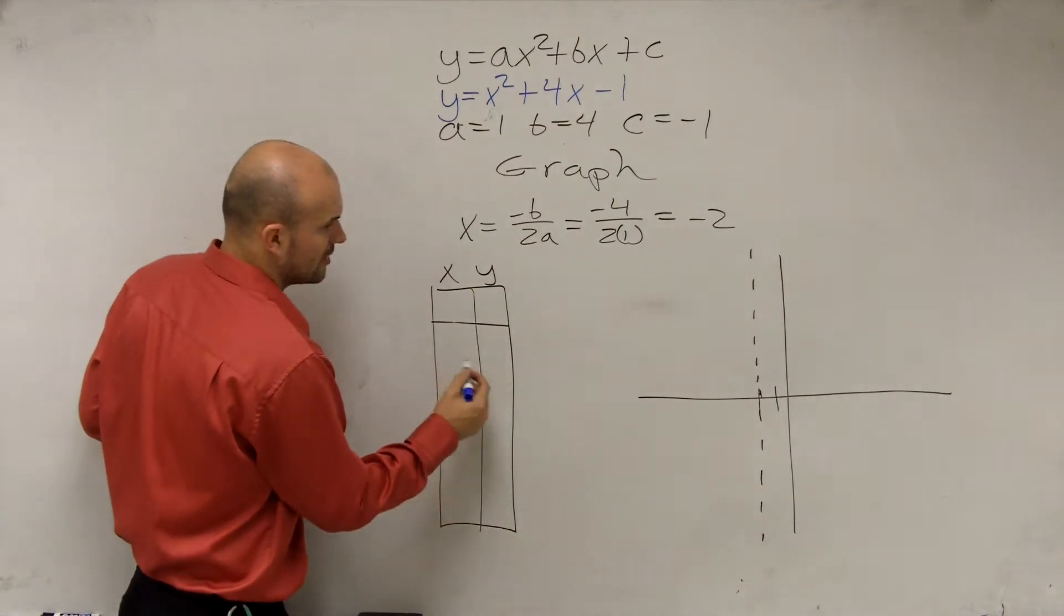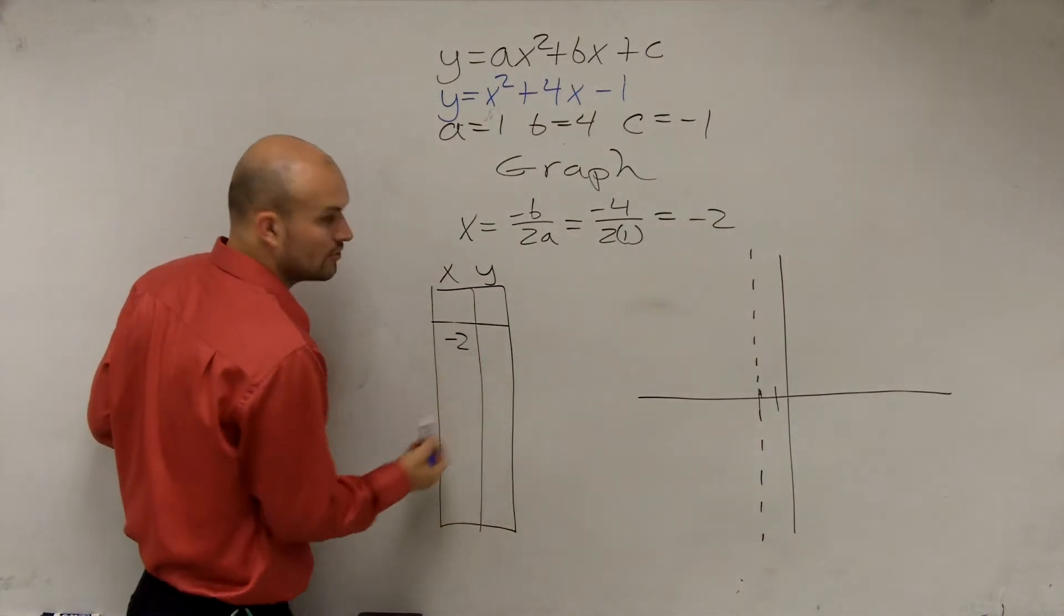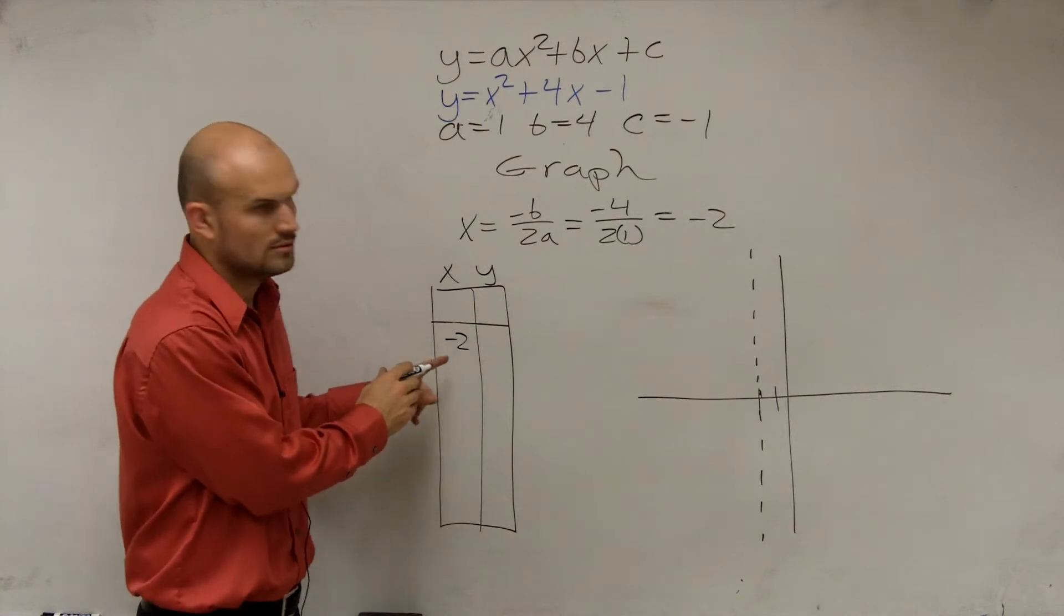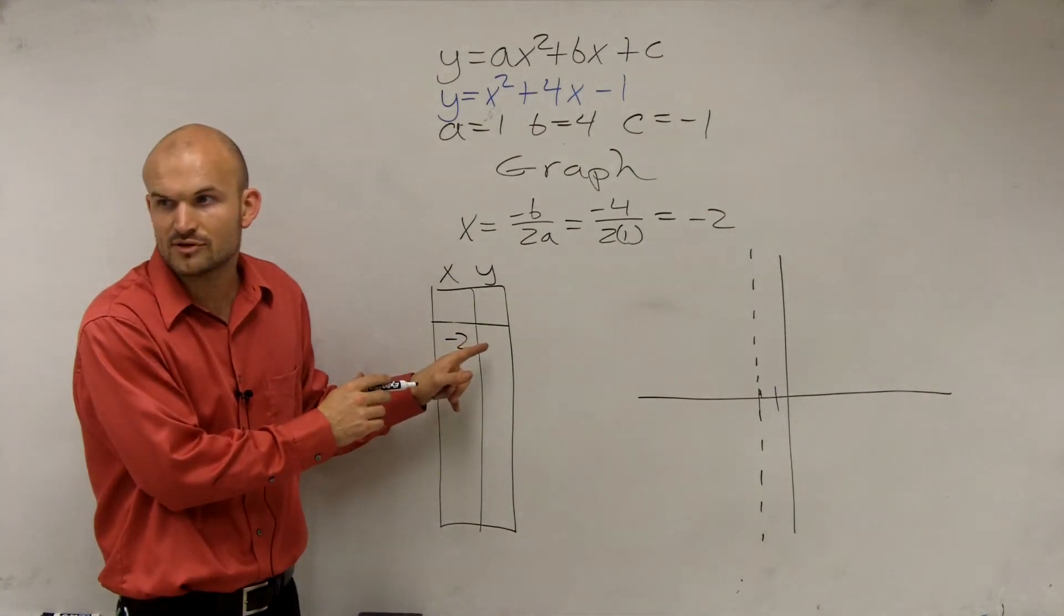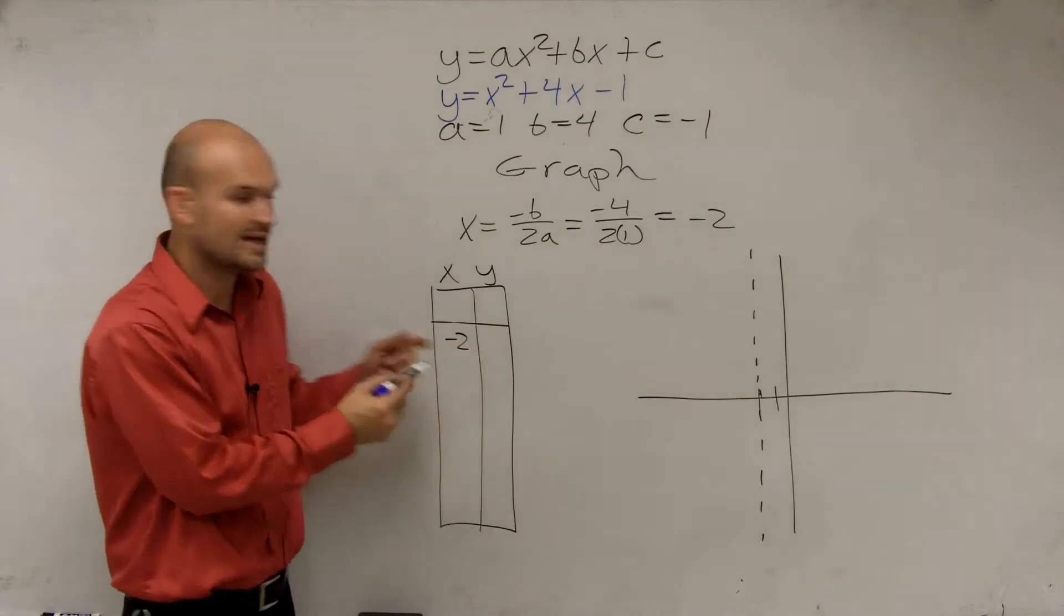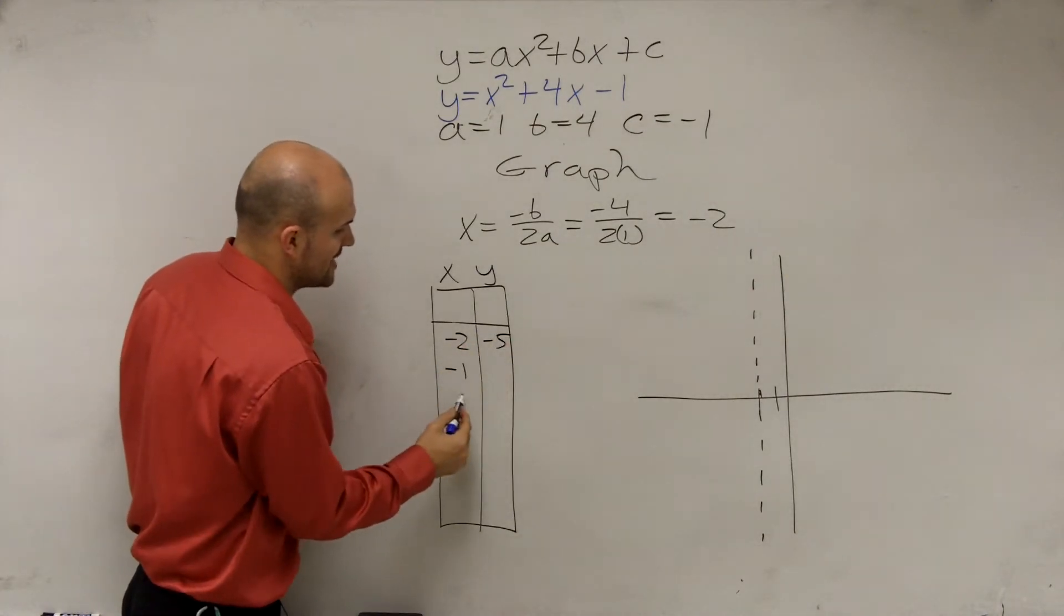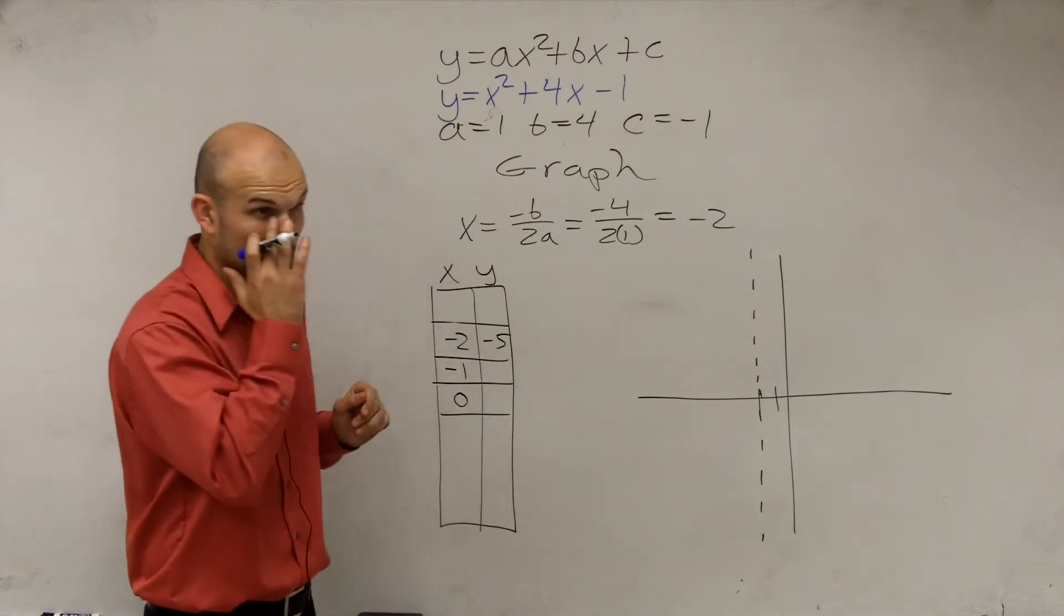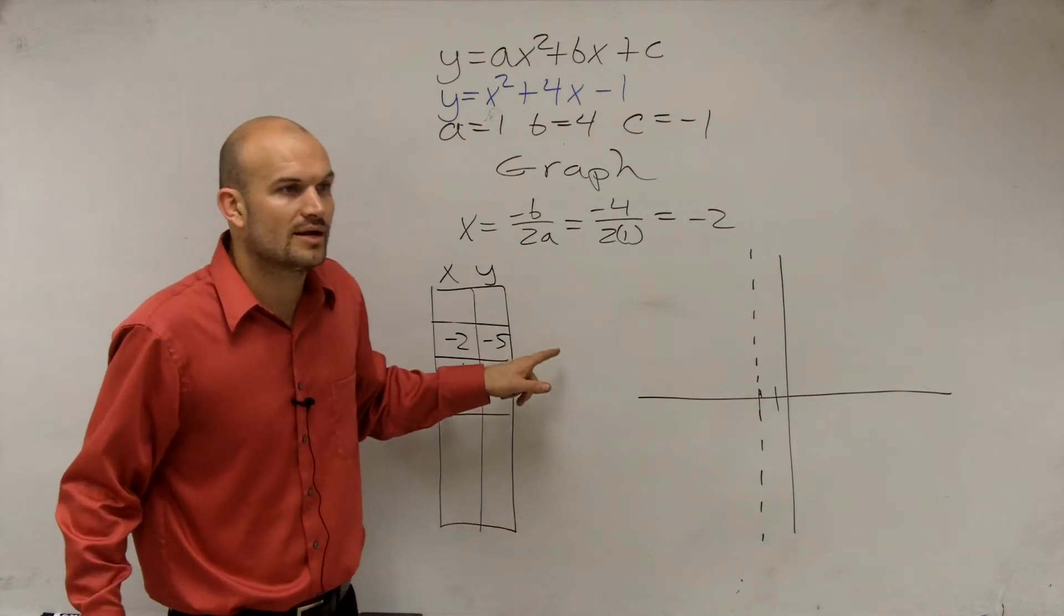Let's do, how about we do, let's do negative 2. What happened when we plugged in negative 2? We got what point? What happened when we plugged in negative 2? What was our vertex? Negative 5. So what happened? So we're going to pick negative 2 and 0, or negative 1 and 0. That was the vertex, right? That's what we did.